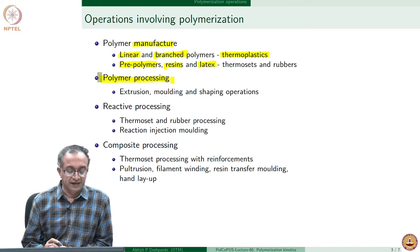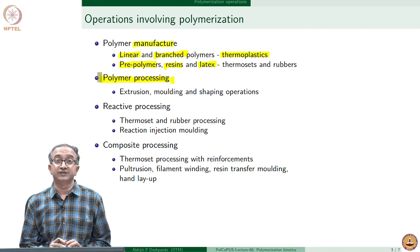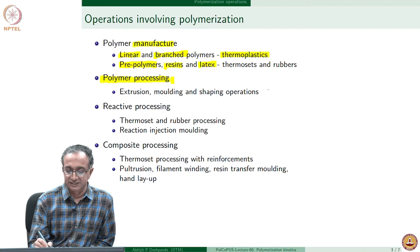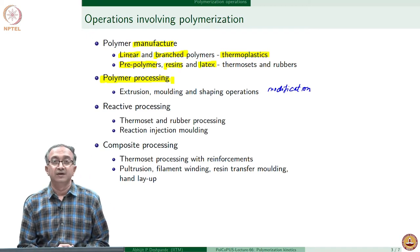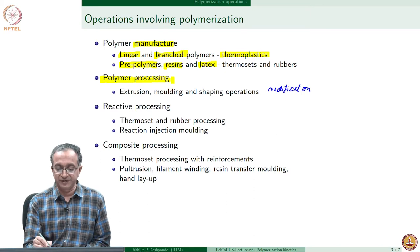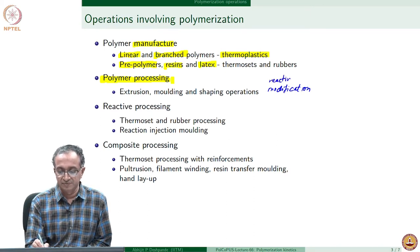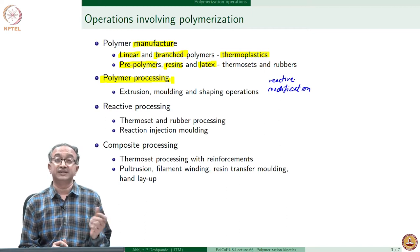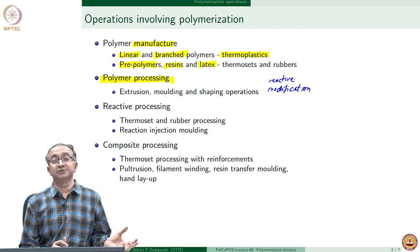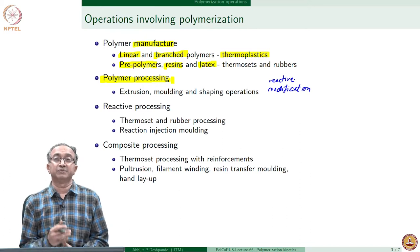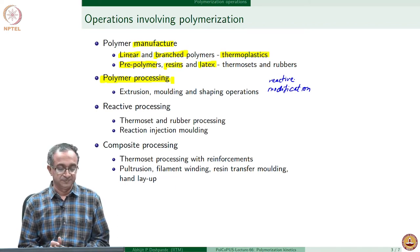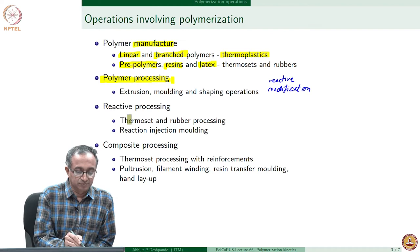In polymer processing generally we only have extrusion and molding operations. However, we could have modifications being done at this stage. We could add a compatibilizer which is a reactive compatibilizer, we could add some amount of branching in a polymer, and so some reactive modifications can be done which can lead to some amount of polymerization. Some cross-linking may also happen - it could be desirable at times but could be undesirable also. Depending on the context, especially in recycling of polymers, many of these reactions may take place. The other is reactive processing itself.